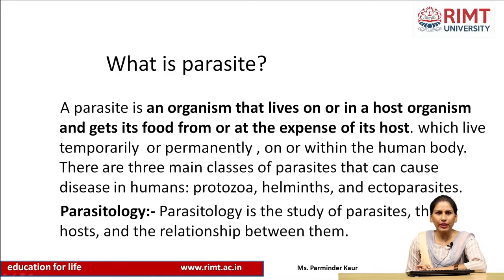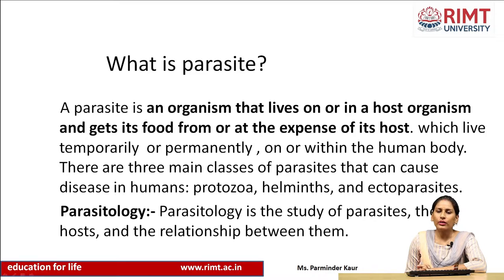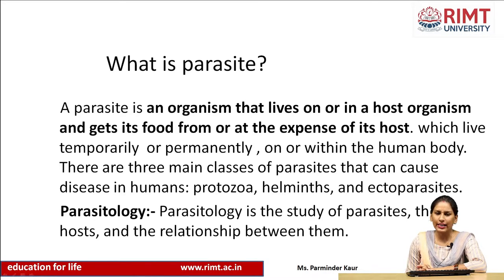There are three main classes of parasites that can cause diseases or infections in the human body. These are protozoa, helminths, and ectoparasites. Protozoa are single-cellular organisms; helminths are multicellular organisms; and ectoparasites, as the name suggests, are those parasites which live on the surface of the human body. Examples are ticks, mites, and lice.